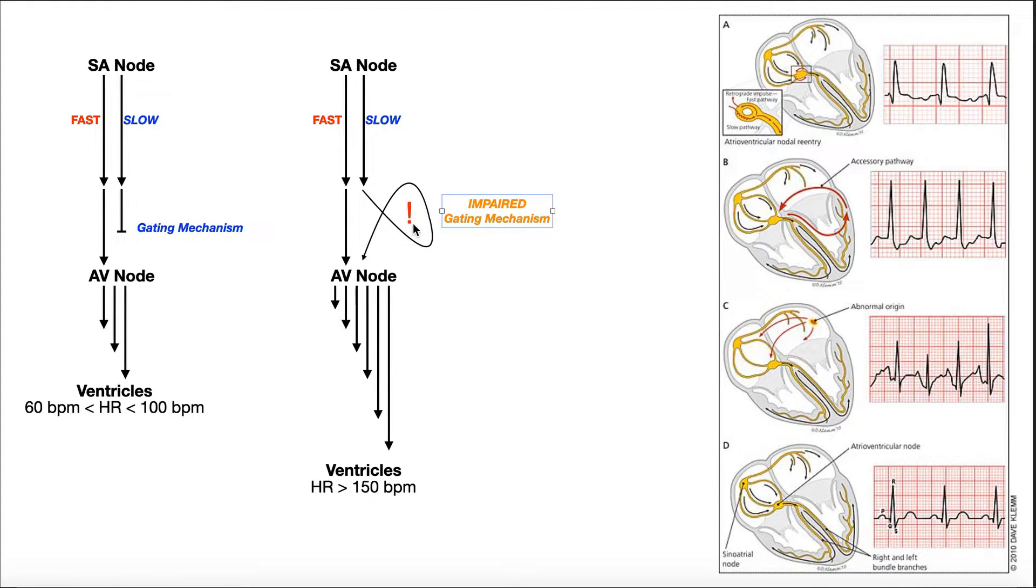Now we've got an issue. Here's our SA node again, we've got multiple pathways that are sending impulses to the AV node. The fast ones are still getting through. But look what's happening in the slow path. Instead of being dissipated by the gating mechanism, something is erroneous. It's actually allowing these impulses to kind of loop around. Instead of being dissipated, they loop around and still end up going to the AV node and going through it. The frequency of impulses going to the ventricles is higher. Therefore, the rate of depolarization and the rate of contraction is going to be higher. We're going to see heart rates above 150 beats a minute. Now, this is one mechanism of supraventricular tachycardia. This is just one.